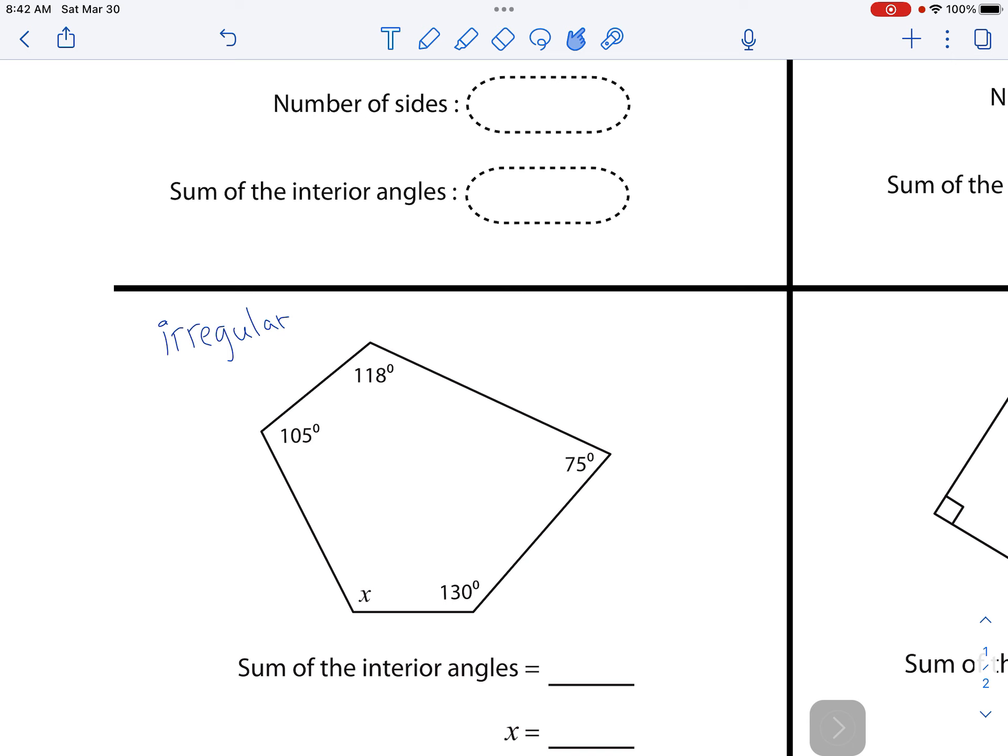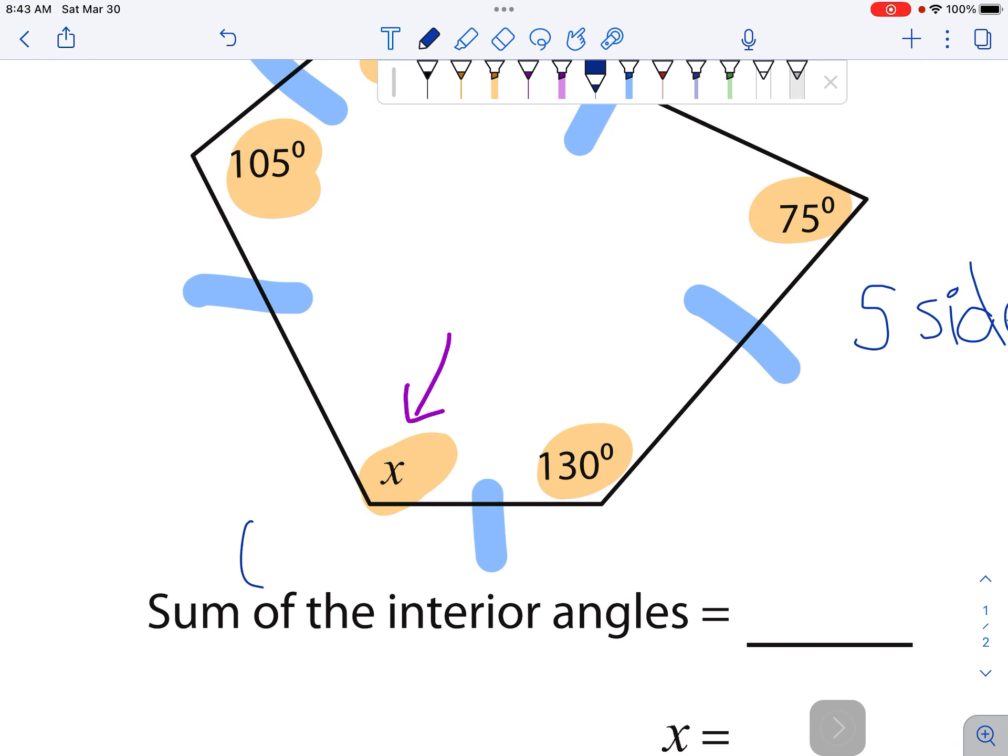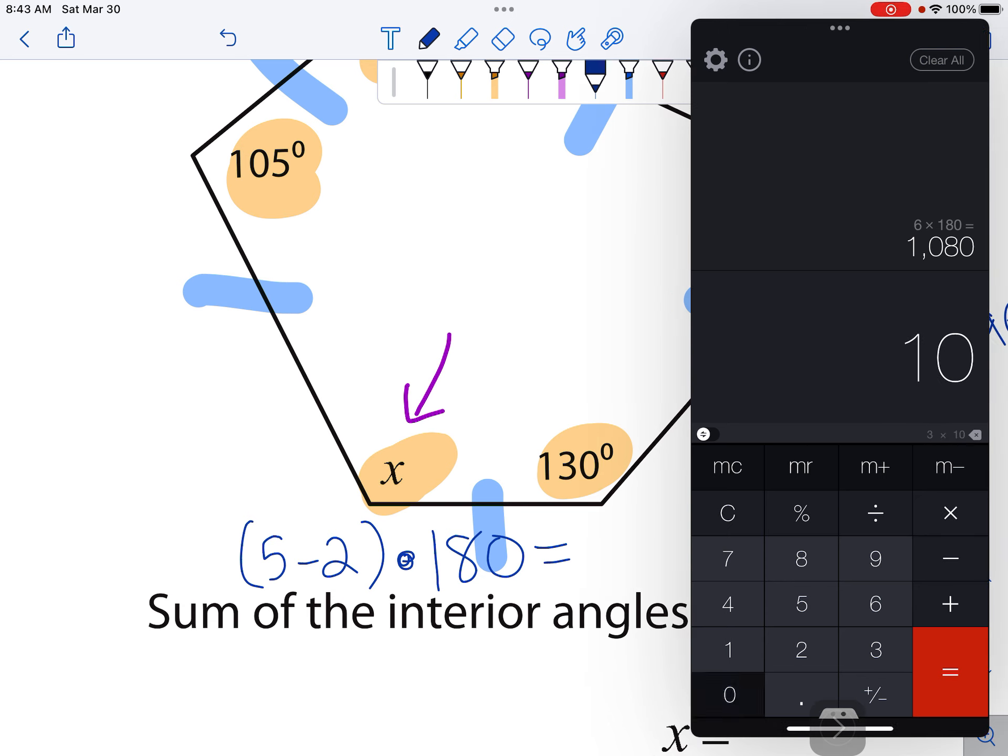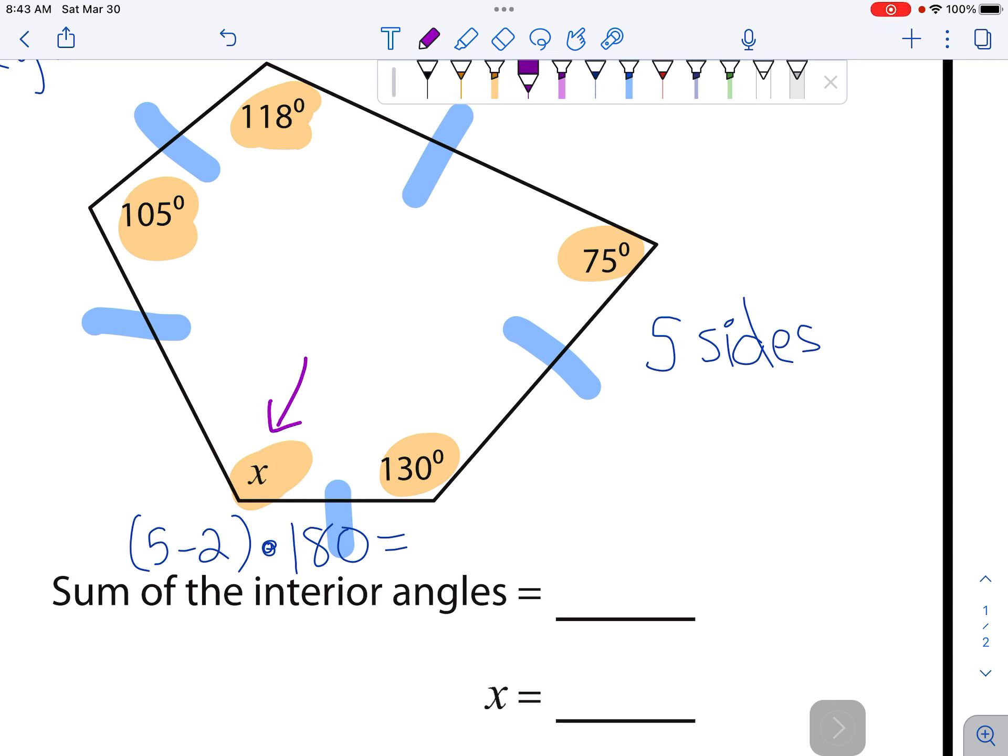Alright, so this is an irregular shape. You can see all the numbers inside the interior of the shape are different, except for that one right there. This is the one we have to figure out. And to do that, we're going to start by counting the sides: 1, 2, 3, 4, 5. So this is a pentagon with five sides. If we want to find the sum of the interior angles, we would say 5 take away 2, then times 180 degrees. So 5 take away 2 is 3. 3 times 180 - there we go - it's 540. So all the numbers in gold should add up to 540 degrees.